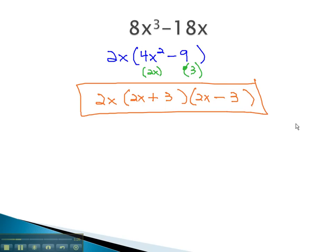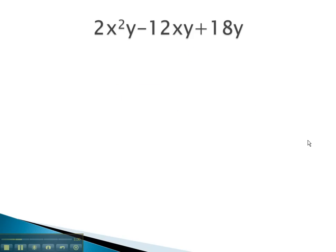Let's try another example where we have to look for the GCF first before we apply a different factoring method. In this problem, you notice we have a GCF of 2y.